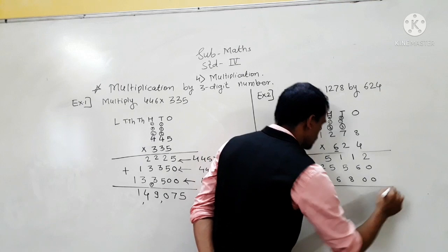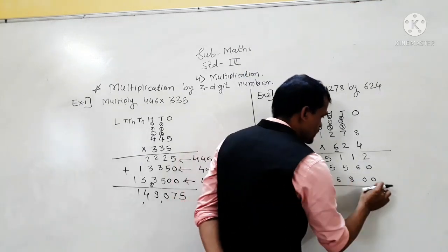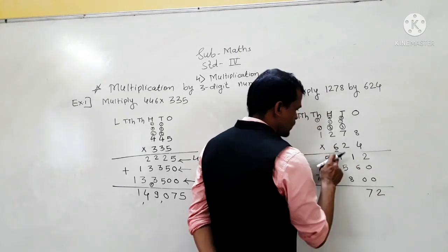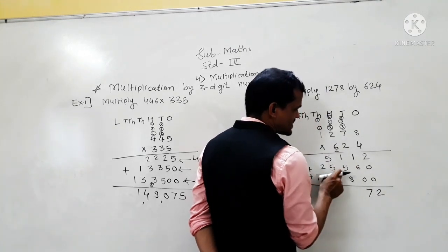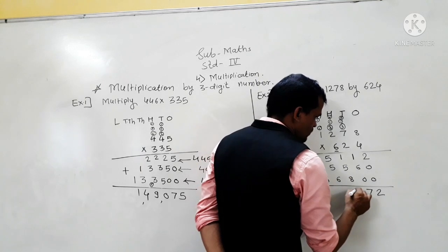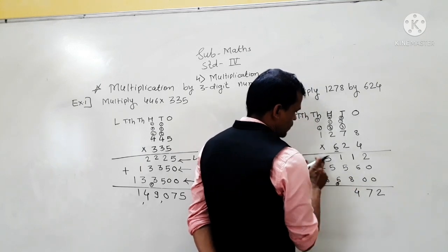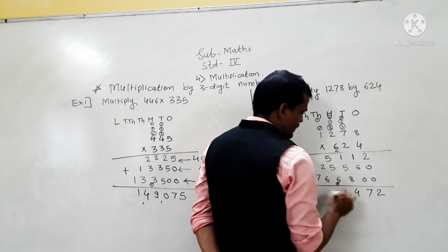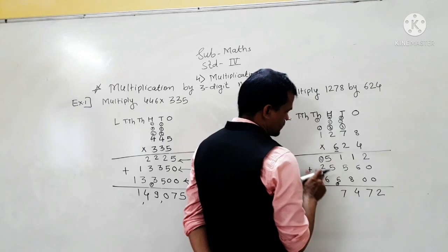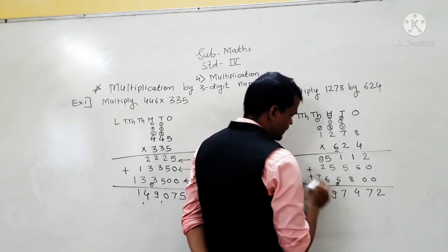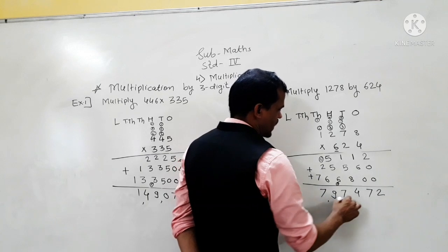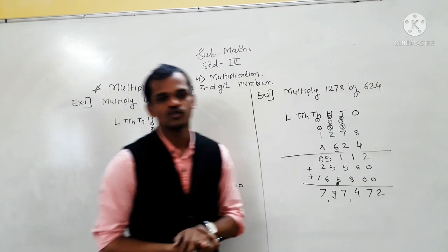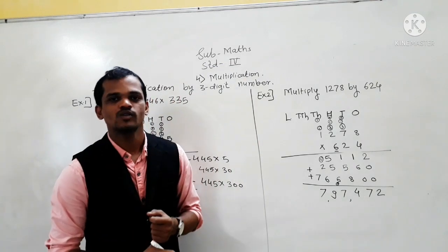Now add these 3 numbers. So, 2 plus 0 plus 0 is 2. 1 plus 6 plus 0 is 7. 1 plus 5 is 6. 6 plus 8 is 14 — carry 1. 5 plus 5 is 10, 8 plus 6 is 16, 16 plus 1 is 17 — carry 1. So 2 plus 6 is 8, 8 plus 1 is 9, and here 7. So the answer is 7,97,472.